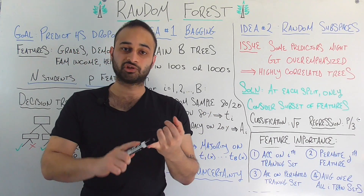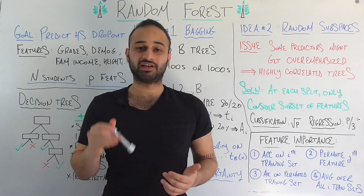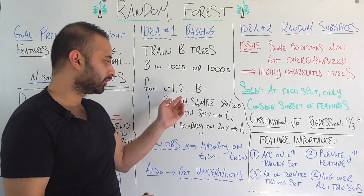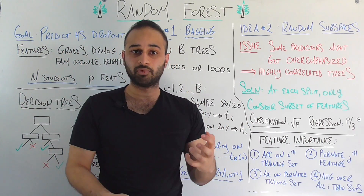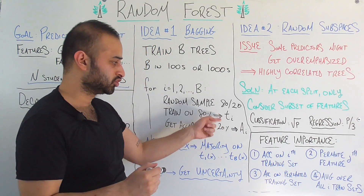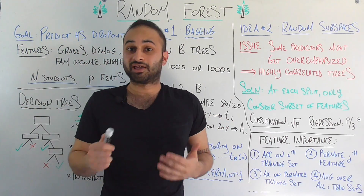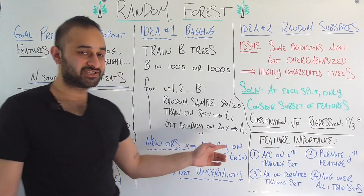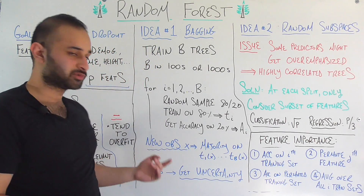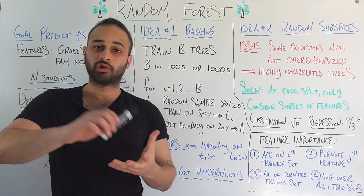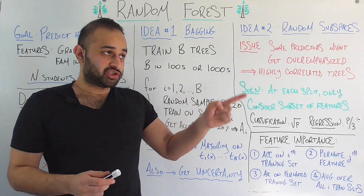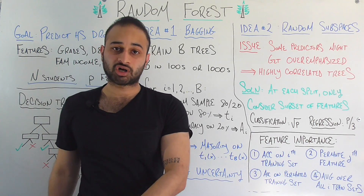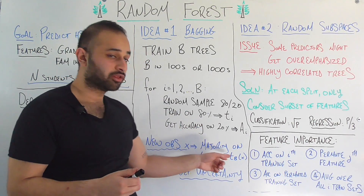So for example, in the first step this will be T1. Then we train the next decision tree — i equals 2 — we get a different 80-20 split, and we build a second decision tree called T2. Since we used a different training set, we're going to get a different tree T2. After we finish this process, we have B decision trees: T1 all the way to TB. Now let's say a new student X comes along, and we're trying to predict whether they will drop out or not. What we do is ask each individual decision tree — for each of these B trees, we ask if the student will drop out.